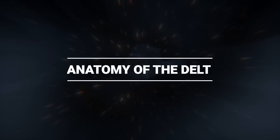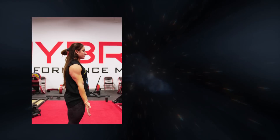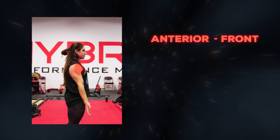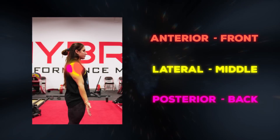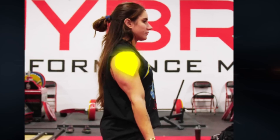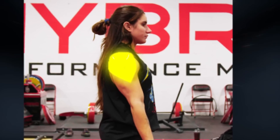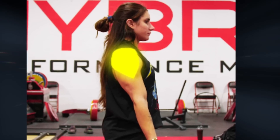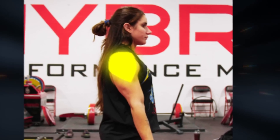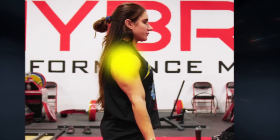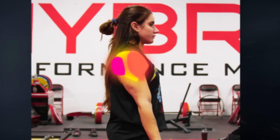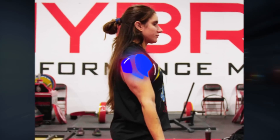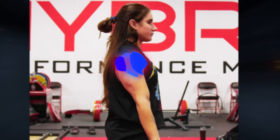Let's first begin by talking about anatomy. The deltoid is divided into three main parts: the anterior, the middle or lateral, and the posterior or rear. The anterior head originates from the clavicle, the lateral head originates from the acromion — that's on the top of the scapula or your shoulder blade — and the posterior head originates from the spine of the scapula. All three heads converge and insert on the humerus at the deltoid tubercle.